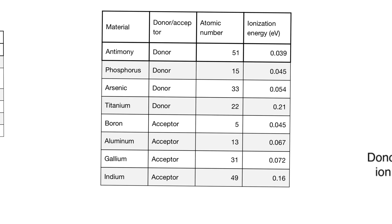With the controlled addition of very specific impurities, we can create silicon that is much more conductive than pure silicon. But not only that — we can also create silicon whose conductivity is of a different type, meaning we can create silicon which has a lot more electrons than holes, or silicon that has a lot more holes than electrons.